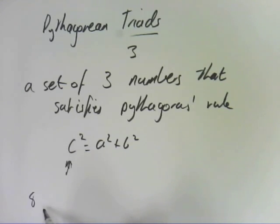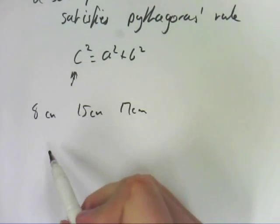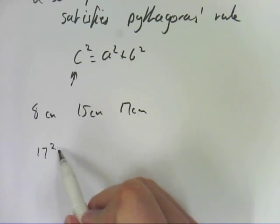So is 8 centimeters, 15 centimeters and 17 centimeters a Pythagorean triad? Let's find out. It's easy to do. All you do is 17 squared equals...